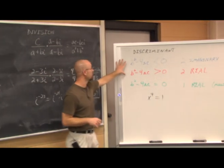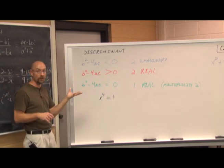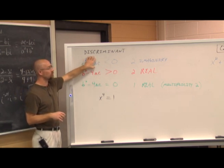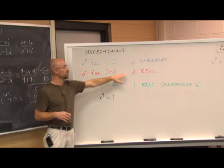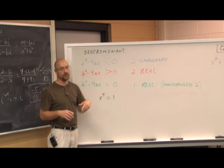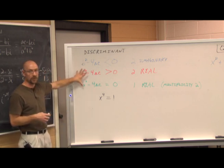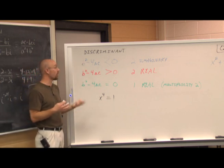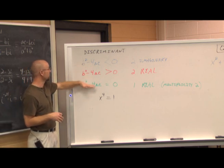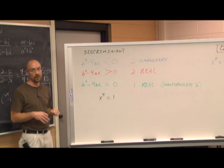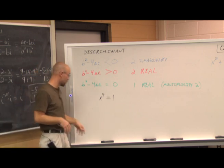Recalling from the last lecture, the discriminant tells us whether solutions are imaginary, real, or one real with multiplicity. If the discriminant is less than 0, the value under the radical in the quadratic formula is negative, giving two imaginary solutions. If positive, we get two real solutions; if zero, one real solution with multiplicity 2. Now that we understand the complex number system, we can solve any quadratic equation regardless of whether its solutions are real or imaginary.